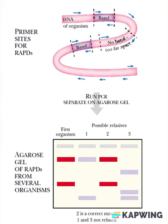For PCR to be successful, two primers must anneal at sites facing each other but on opposite strands. In addition, these paired primer sites must be close enough to allow synthesis of a PCR fragment in a reasonable time.